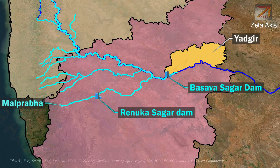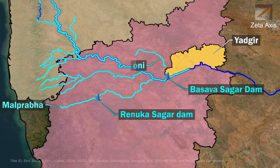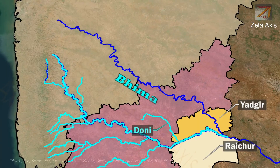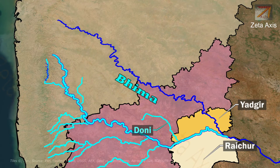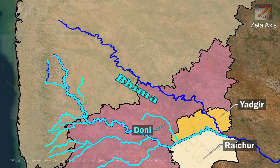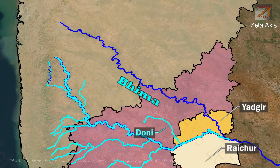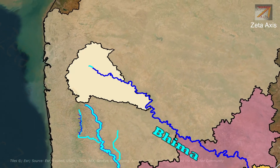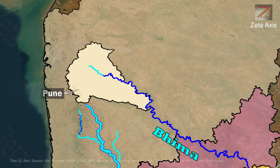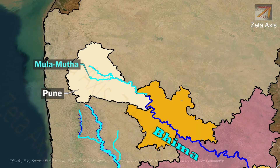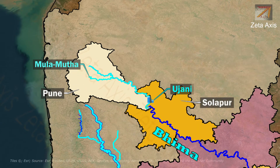Just after the Basava Sagar Dam, the Dhoni River joins the Krishna River. In Raichur district of Karnataka, the Bhima River joins the Krishna River. The Bhima River is an important left bank tributary of the Krishna River, originating in the Western Ghats in Pune district. From Pune, the Bhima River enters Solapur where the Ujjaini Dam is built on it.